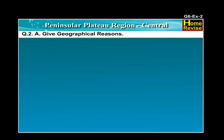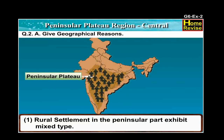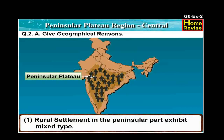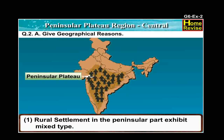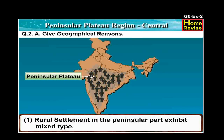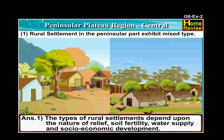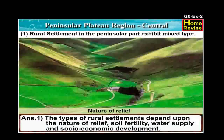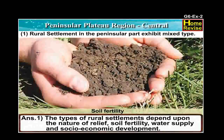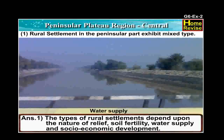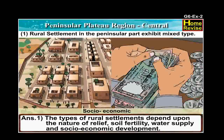Question number 2A. Give geographical reasons. Number 1: Rural settlements in the peninsula part exhibit mixed types. The answer is: The types of rural settlements depend upon the nature of relief, soil fertility, water supply and socio-economic development.